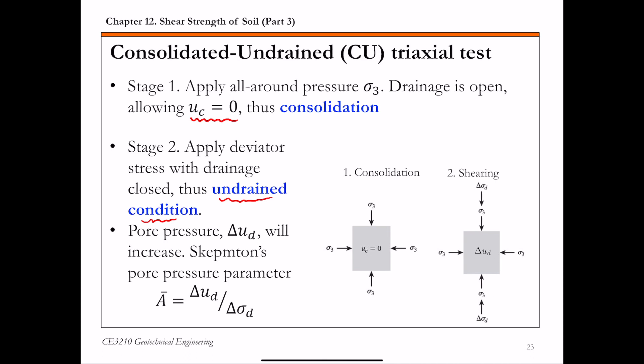Looking at the two figures on the right, in the consolidation stage, the excess pore pressure Uc is dissipated, so it's zero at the end of consolidation. The excess pore pressure generated during the shearing stage is called Ud or delta Ud, and this delta Ud increases as you shear the specimen. We can then define Skempton's pore pressure parameter A-bar, which is the ratio of delta Ud — the excess pore pressure during the shearing stage — over delta sigma d, the deviator stress applied.